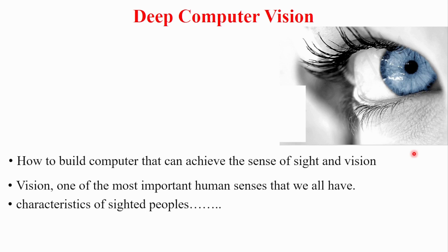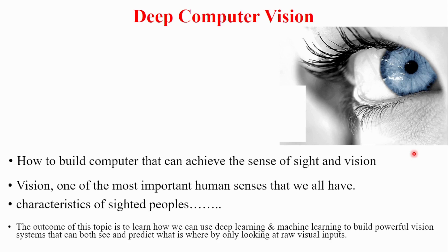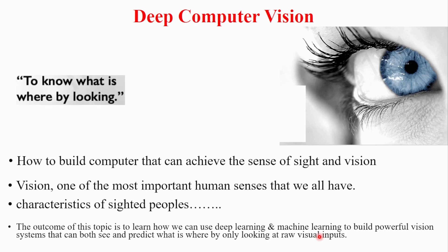Today we are going to learn how we can use deep learning and machine learning to build powerful vision systems that can both see and predict what is where, by only looking at raw visual inputs. This is the precise definition and main theme of computer vision: to know what is where by looking.